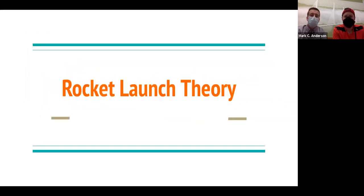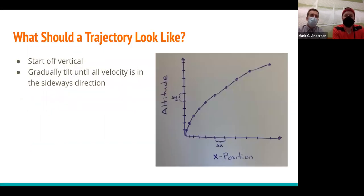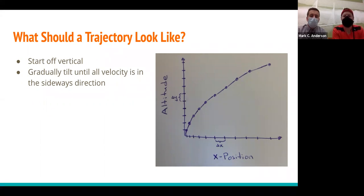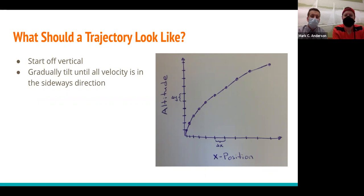We're going to talk about the rocket launch theory and how we came up with our equations. We modeled it similarly to the Brachistochrone problem, where we set equal increments in Y and vary the change in X. We made an initial guess of a parabola and based our equations off of this trajectory and the changes in X and Y.